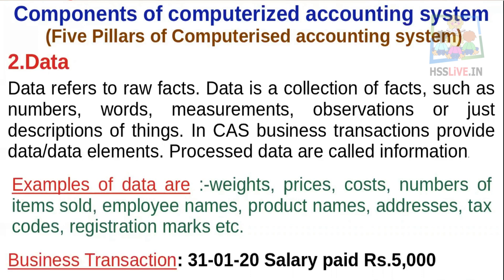For example, for a business transaction on 1st January 2020 — salary paid, rupees five thousand — the data elements in that transaction are: the date, the debit item (salary account debit), the credit item (cash account credit), and the amount (five thousand rupees). These parts of the transaction are called data elements.